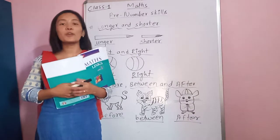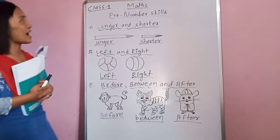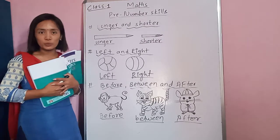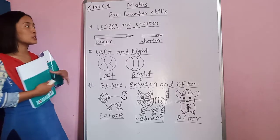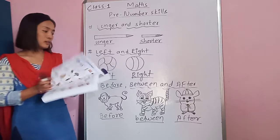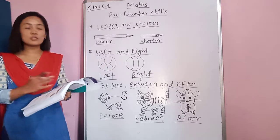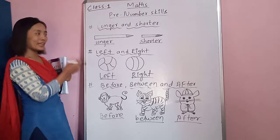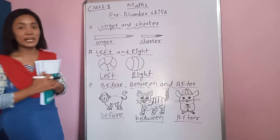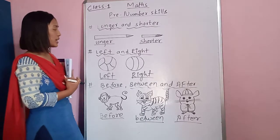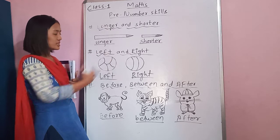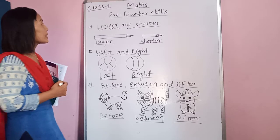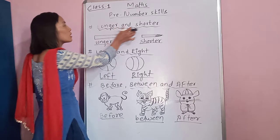Hello, good morning my dear students. I hope you all are fine at home. Today I am going through Unit One of Class One. In the previous video I taught you about inside and outside, bigger and smaller, and taller and shorter. But today I'm going through the topics: longer and shorter, left and right, and before, between and after. So I'm going to tell you what these mean. Listen very carefully. The first topic written here is longer and shorter.